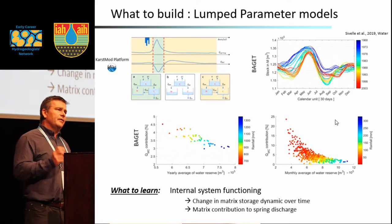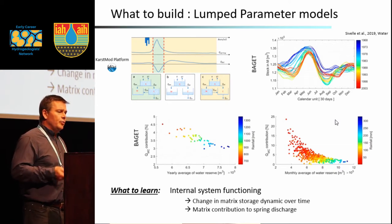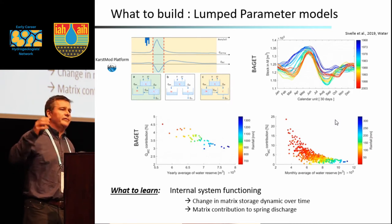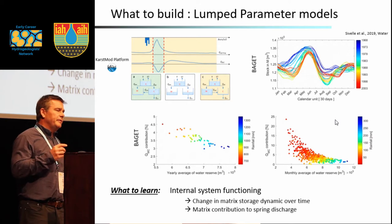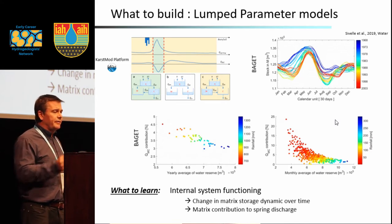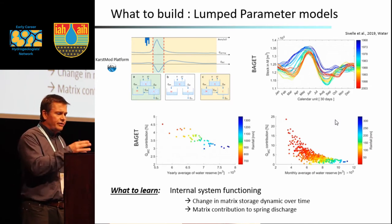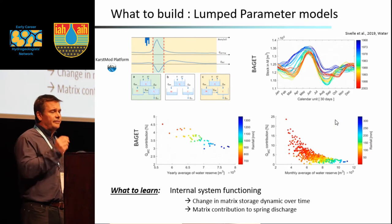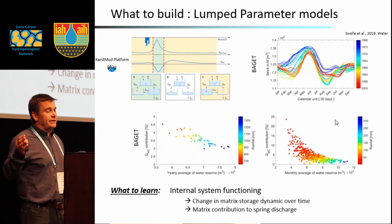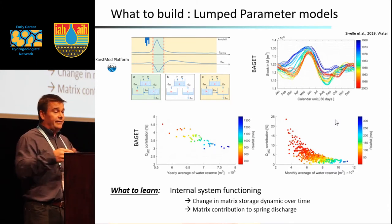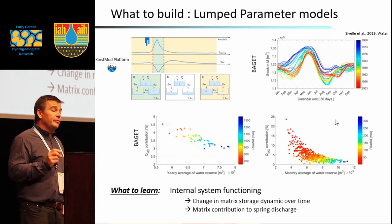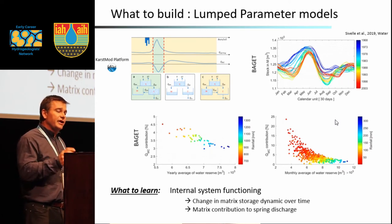With such models we can also look inside the internal system functioning. We can identify on one side a capacitive compartment, generally said to be the matrix compartment, and a more transmissive compartment said to be the conduit compartment. We can look at the exchange between both compartments following a given recharge event. Following recharge events there is an increase in discharge, and as the pressure within the conduit reservoir increases, it feeds the matrix. Afterwards, the matrix feeds back the conduits.